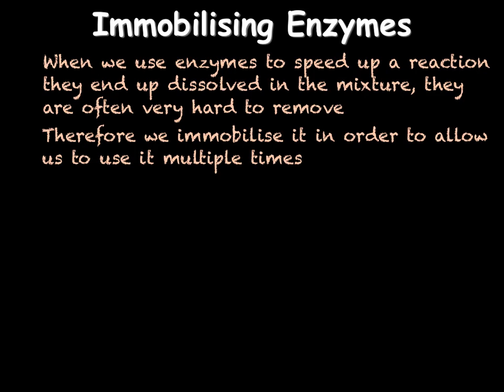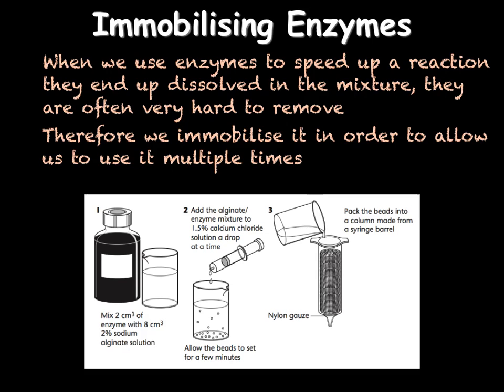To produce lactose free milk we carry out a process known as immobilisation — this prevents the enzyme from ending up in the finished product. When enzymes are used to speed up reactions they usually end up dissolved in the mixture, making them difficult to remove, which is problematic for industry: the product would be shipped with the enzyme in it, and the enzyme cannot be reused. To immobilise them we attach the enzyme to an insoluble material or place them inside beads.